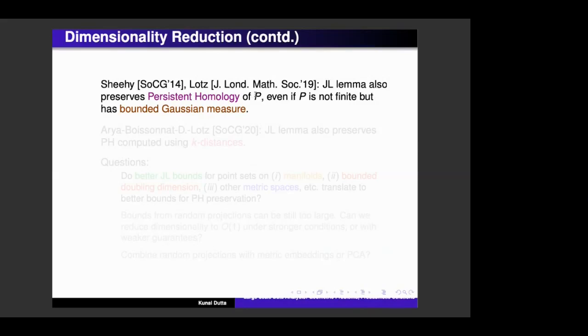And this is true, even if you don't have a finite number of points, but you only know that your points lie in a set of bounded Gaussian measure. So there were more results which show that you can also do this if you are using what are called as k-distances instead of usual Euclidean distance. So here, this is a slightly different definition of distance to a point set.